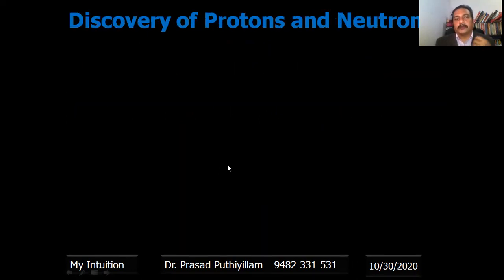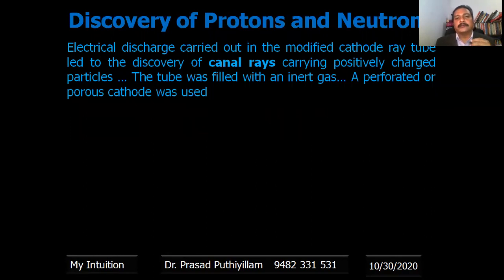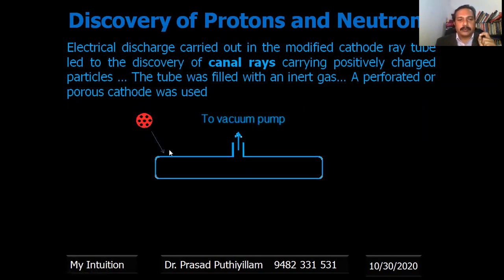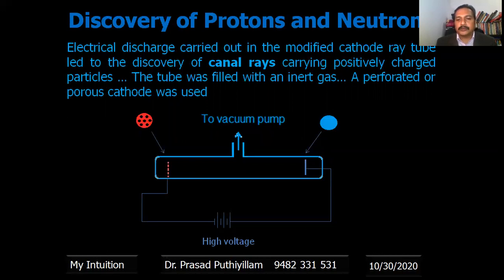Discovery of protons and neutrons. We already discussed the discovery of electrons by the famous discharge tube, that's the cathode ray tube experiment. The same cathode ray experiment can be modified to find out the presence of protons and neutrons. Electrical discharge carried out in the modified cathode ray tube led to the discovery of canal rays carrying positively charged particles. The tube was filled with an inert gas and a perforated or porous cathode was used. In cathode ray experiment we used a porous anode. The experiment can be represented: a porous electrode acts as the cathode which is fused to a tube in which we can create vacuum by connecting to a vacuum pump. An anode is connected and they are connected to a battery.